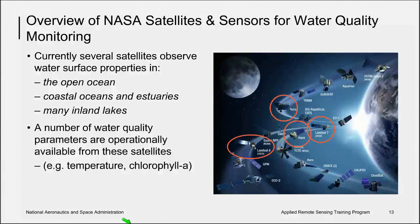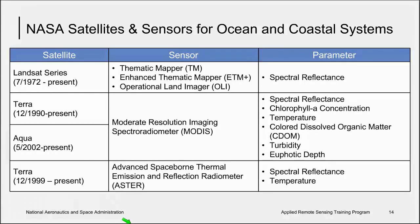There are currently several US satellites used for the remote sensing of open ocean, coastal, and inland waters. These include Landsat 7 and Landsat 8, the Aqua and Terra satellites, the International Space Station, and the Suomi NPP as well. These next slides provide a reference to the different satellites and sensors used for ocean color remote sensing.